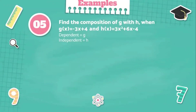Example number five: find the composition of g with h when g of x equals negative 3x plus 4 and h of x equals 3x squared plus 6x minus 4. As you can recall in example number one, we also used the same given functions. However, you have to take note of the order of the functions because it will result in a different answer. In this example, our dependent function is g and our independent function is h.